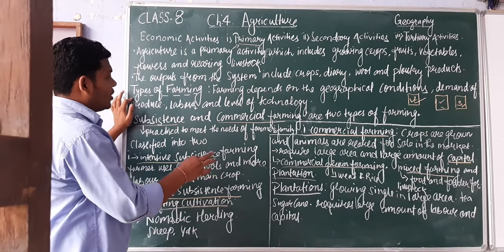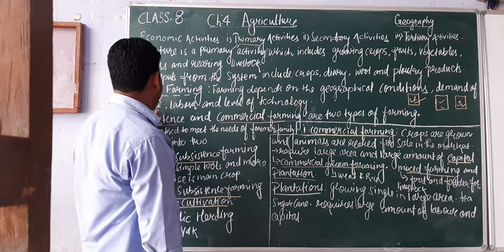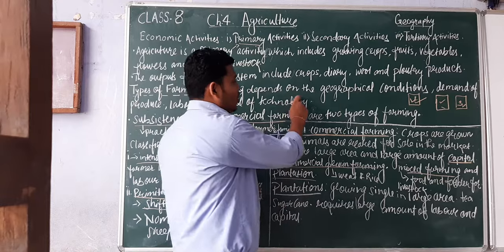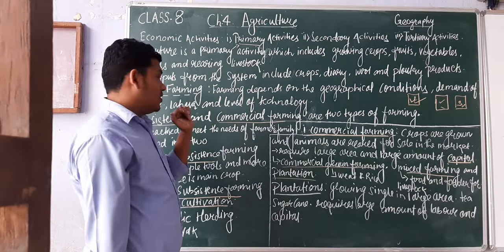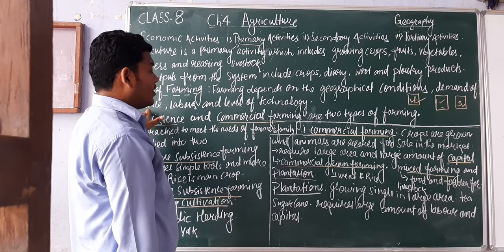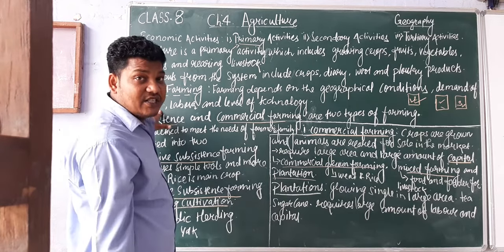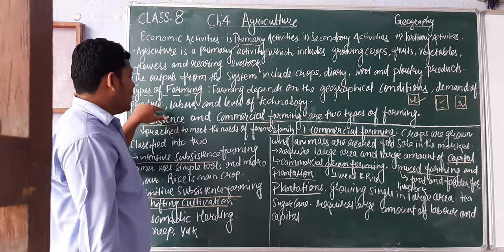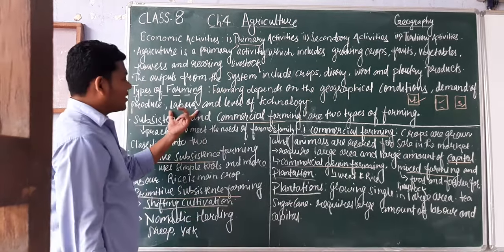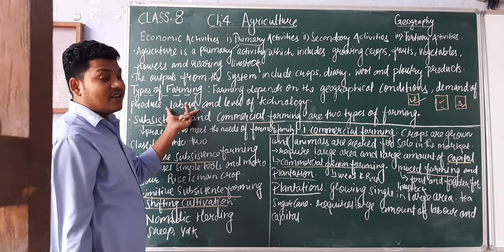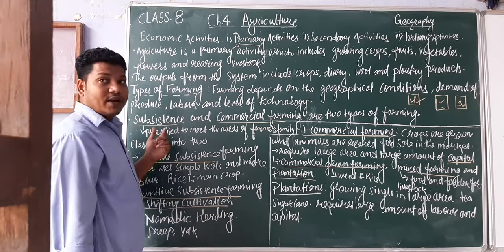According to different geographical conditions, we have different types of farming. The types of farming depend on geographical conditions, demand of the produce, labor availability, and the level of technology used for growing. These are the main factors that determine the type of farming.